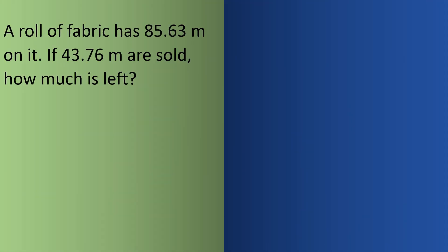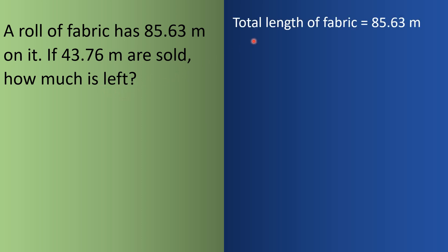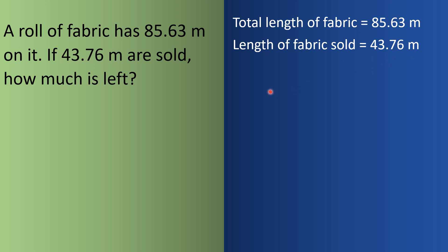Now let us do one more word problem. A roll of fabric has 85.63 m on it. If 43.76 m are sold, how much is left? What is given: total length of fabric is 85.63 m, and length of fabric sold is 43.76 m. We need to find the length of fabric left — so it is a subtraction question.